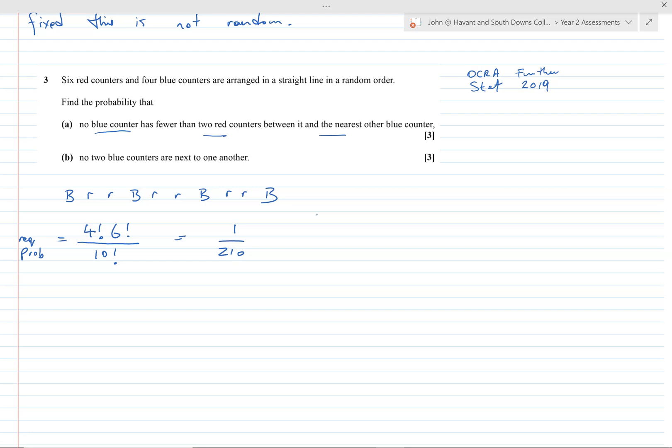Okay, so that's the first part. The second part, now the first part I often think was harder to understand what they were getting at, but once you realized they kind of got this kind of diagram it was easy enough. Part b is a type of question that once you've seen it a few times I think it's okay, but first time it's a bit confusing. No two blue counters are next to one another.